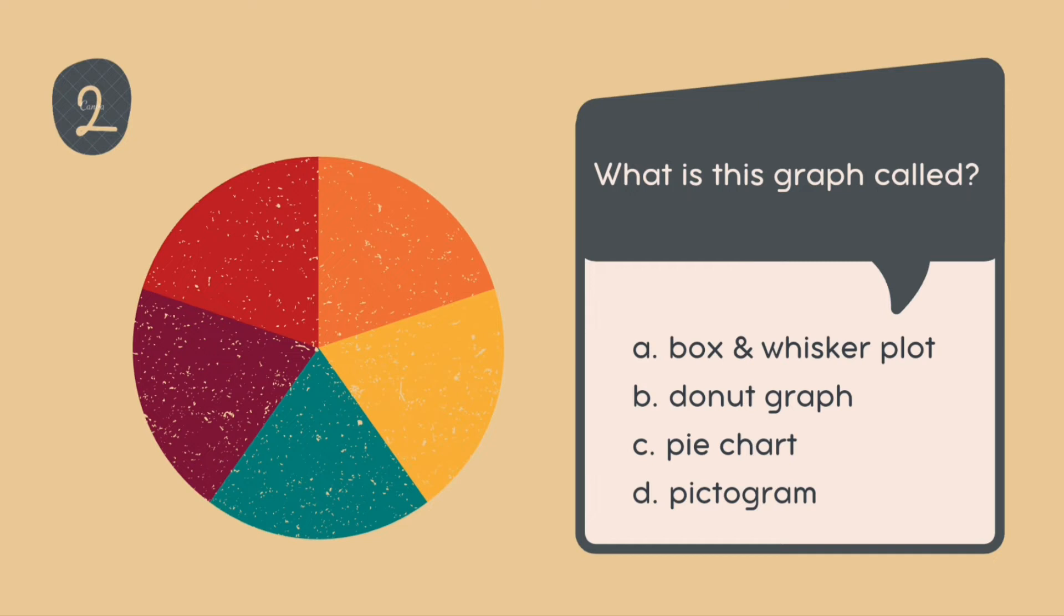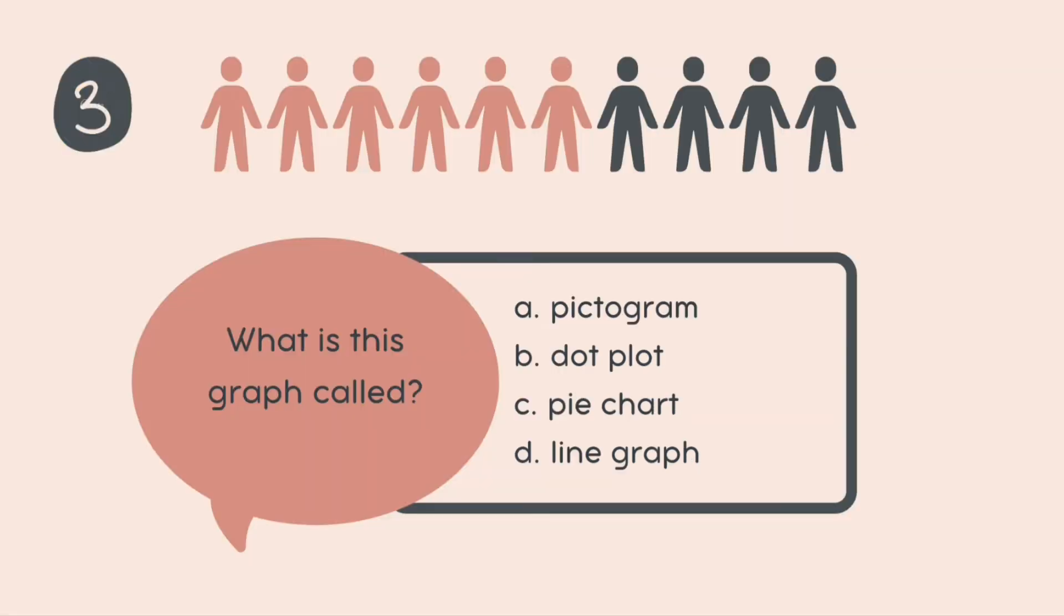Now moving on, what would this be? Oh it looks like a, what, it looks like a few slices of something, a cake maybe, a pie. What is it? What is this graph called? Is it a box and whisker plot or a donut graph or a pie chart, pictogram? What is it? Moving on to our next graph, I hope you guys have jotted down your answers. Take a pen and paper, jot down your answers and once you are done with the quiz post them in the comments.